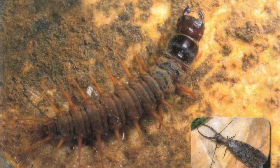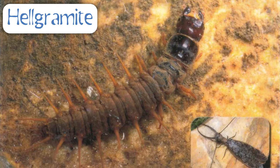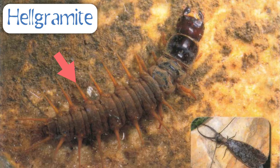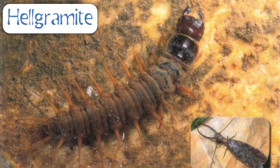The last organism in group one is the hellgrammite. Hellgrammites are among the largest of aquatic insect larvae. The long orange filaments along the abdomen help the hellgrammite take up dissolved oxygen from the water. Adult hellgrammites are called dobsonflies. The picture in the bottom right corner is a male dobsonfly — males have long tusks coming off the head that help to attract a mate.